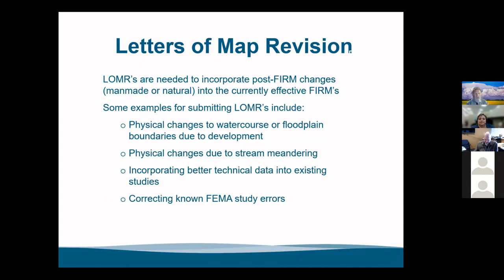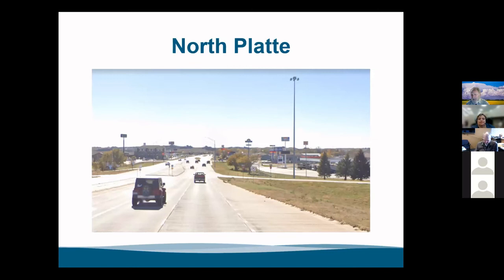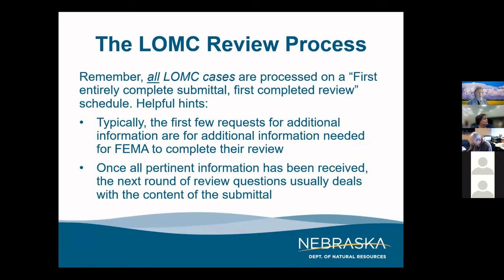LOMRs are needed to incorporate post-FIRM changes — man-made or natural — into the current effective FIRMs. Many of you in the northeast know the Elkhorn River just isn't where it was before 2019. You might need to request a LOMR because the river changed — a natural change. Or maybe man-made changes like the dams in Waverly or Wahoo. North Platte is the best example of this: most of you have driven I-80 through North Platte and seen all that low ground south of the interstate — that was all in the floodplain. North Platte used better modeling and got about 80% of that area south of the interstate removed from the floodplain, which really helped them with economic growth.